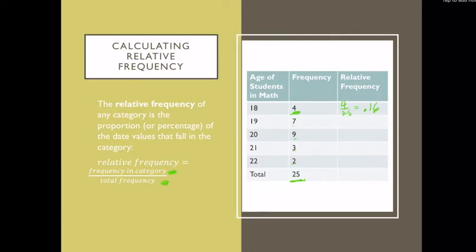And I do that for every single category in order to calculate the relative frequency. So I could take 7 divided by 25, that would give me 0.28. I could take 9 divided by 25, that would give me 0.36. 3 divided by 25 is going to be 0.12, and 2 divided by 25 is going to be 0.08.